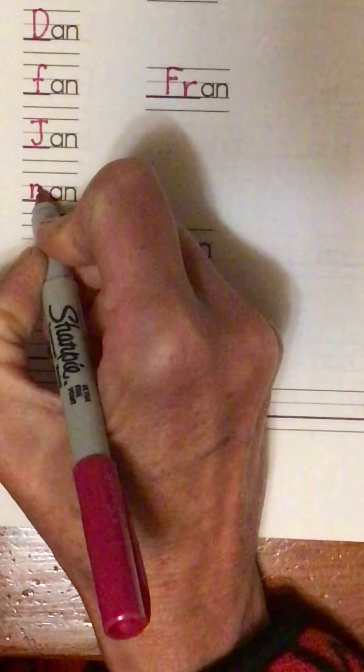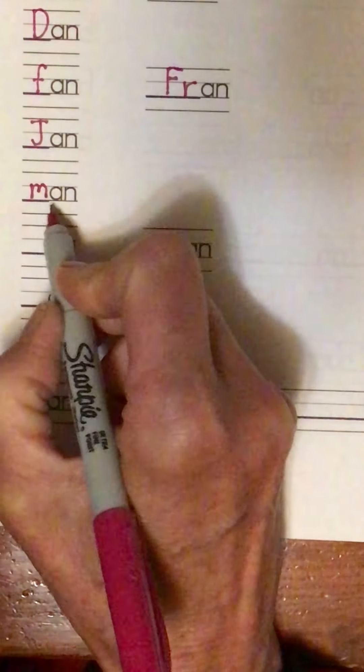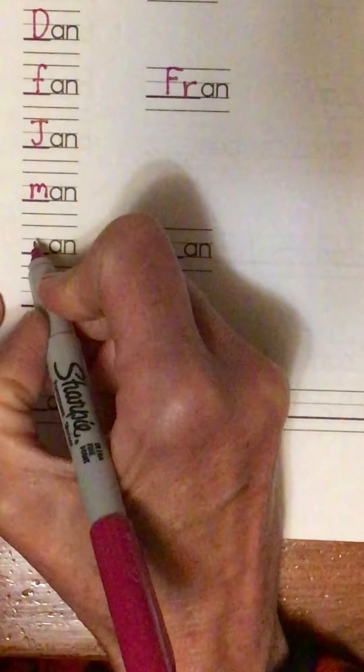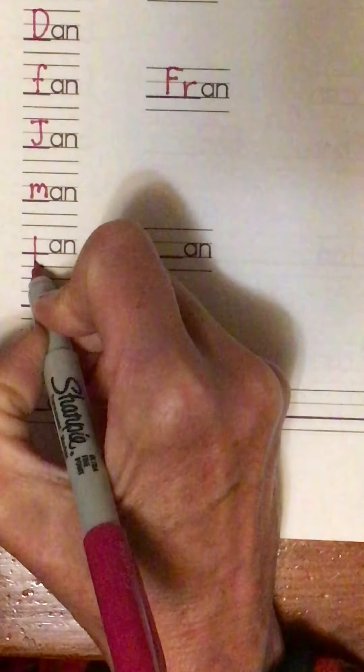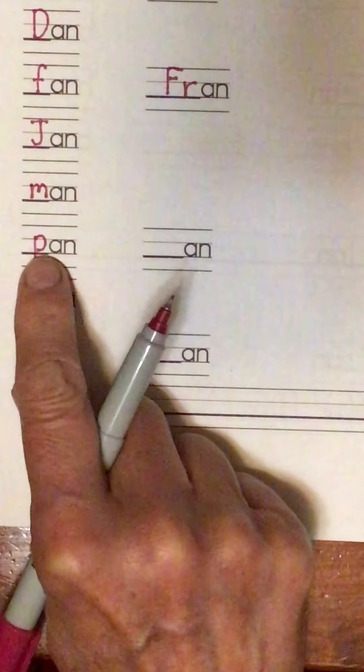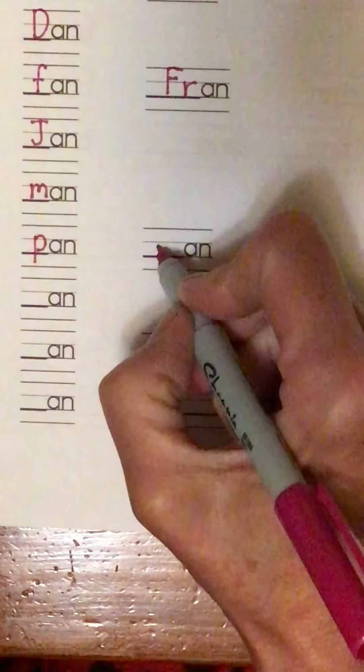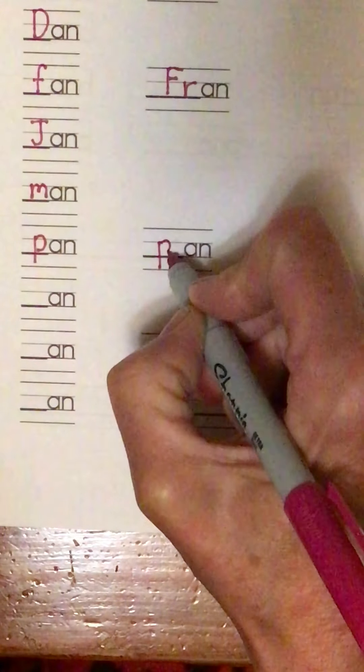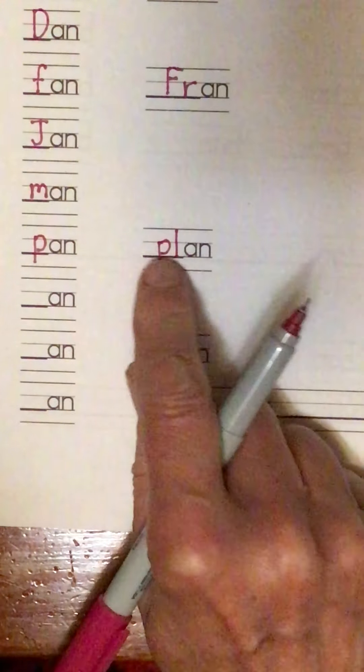This is an M, mm, man. And then I've got a P, pan. And I've got a P, L, plan.